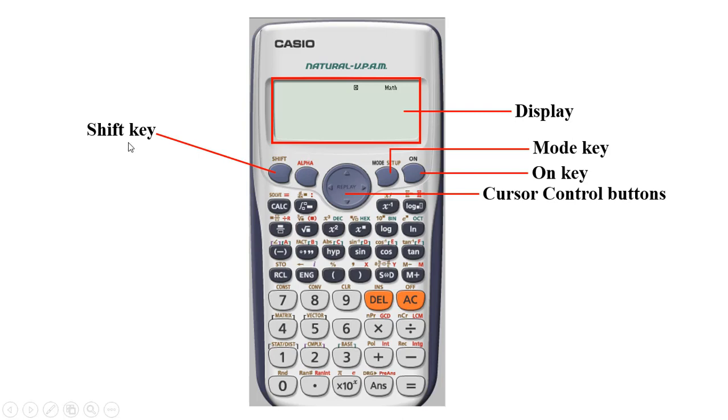Now we have the shift key. Actually the shift key enables you to access secondary functions of a particular key. For instance you can see solve here and it has the same color as shift. Before I can access this particular function I have to press the shift key. You see here if you press on this key it gives you a fraction, but when you press shift and press that it gives you the mixed fraction layout.